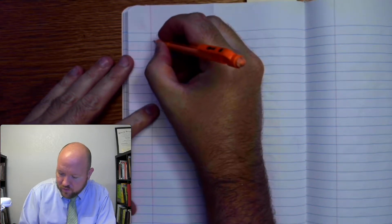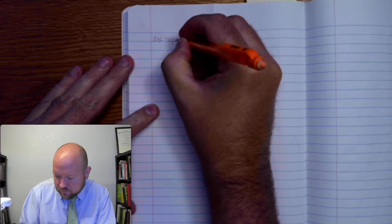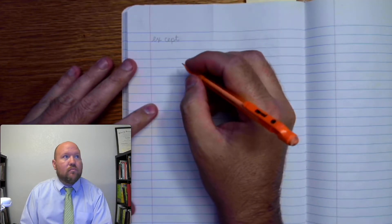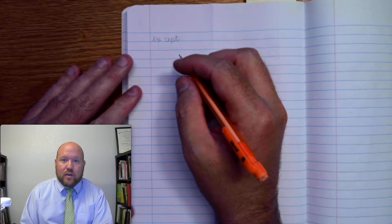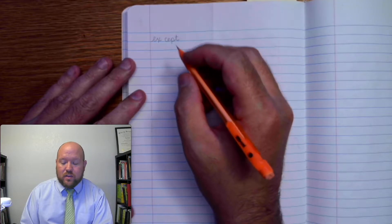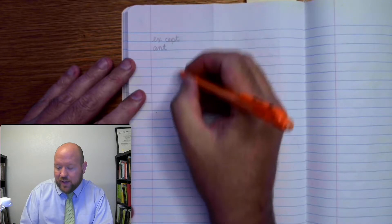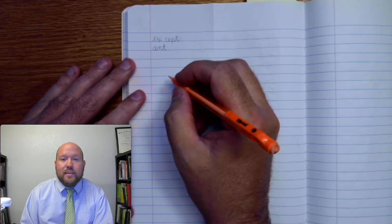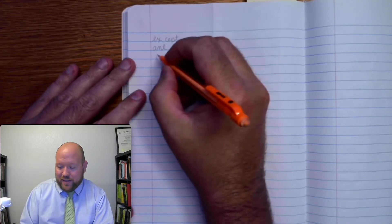All right, so the first word is the word accept. Accept. Ex-cept. Write it. Ex-cept. Next one. Ant. Like the ant that crawled across the counter. Ant. Go ahead and write it. A-N-T. Ant. The next one is like ant. Like my Aunt Sally. Go ahead and write it. Ant.